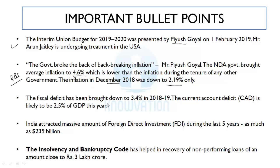The fiscal deficit has been brought down to 3.4% in 2018-19. The current account deficit, CAD, is likely to be 2.5% of GDP this year. Please remember what fiscal deficit and current account deficit mean. Fiscal deficit means when government expenditures are more than earnings. Current account deficit means imports are higher than exports. Note these two figures — if you quote them in GDs and interviews, it makes a very nice impression.